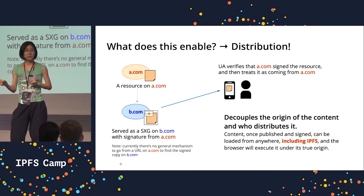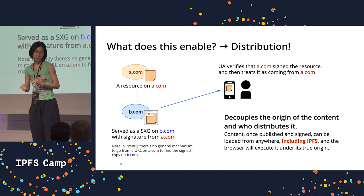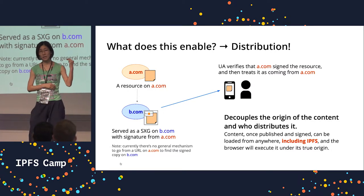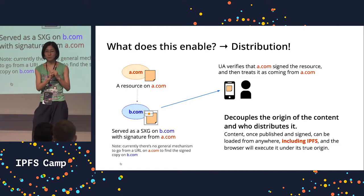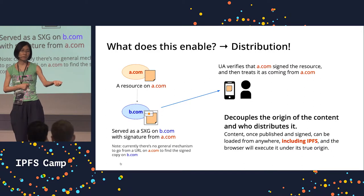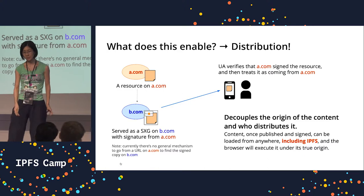So when the browser loads this content or the signature, it can actually show the true origin in the address bar and also give the right permissions to that origin — regardless of wherever the content was loaded from. It can come from peer computers, like from IPFS of course.